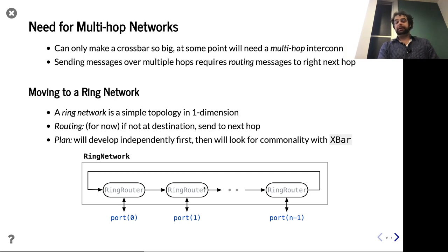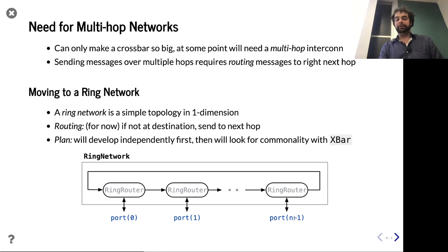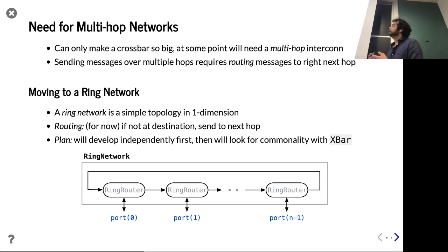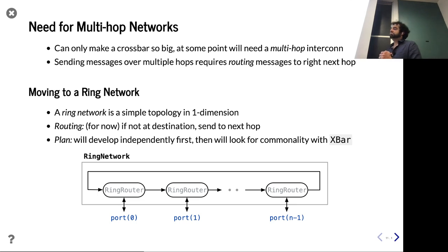The routing strategy is: if a message is at a router and the ID matches where it's trying to go, great — send to that port, it reaches the host. If not, just send out the single outport and let the next router worry about it. The next router looks at it and decides: is it a match? Great, take it off the network. If not, send it out to the next one. The routing algorithm is definitely going to be correct — assuming you have an address within the range of zero to n minus one, it will eventually find its destination. It loops all the way back around — it's a ring.